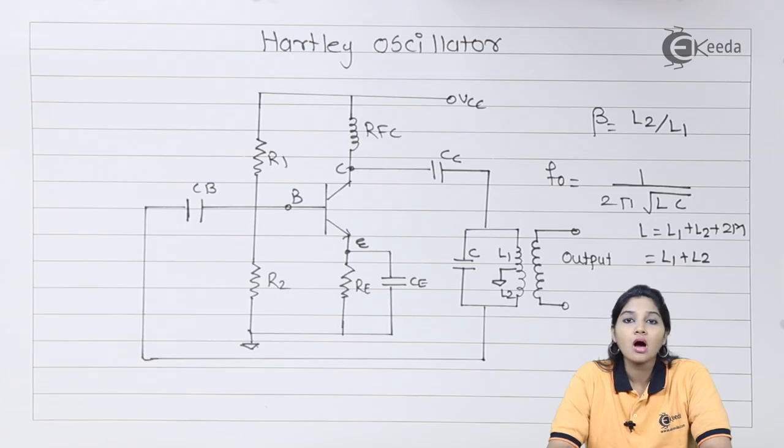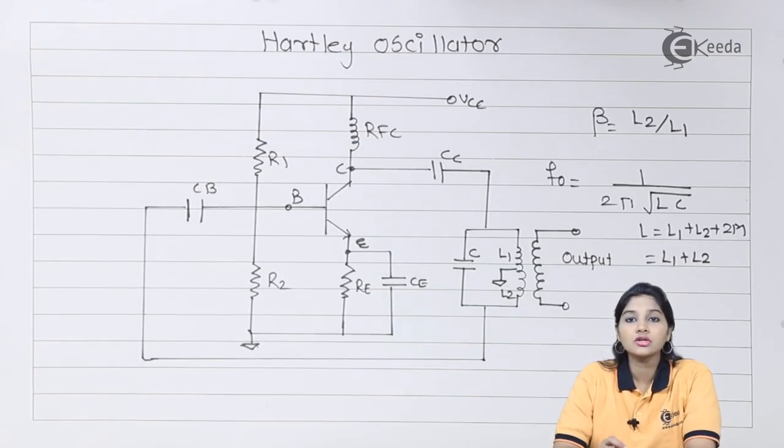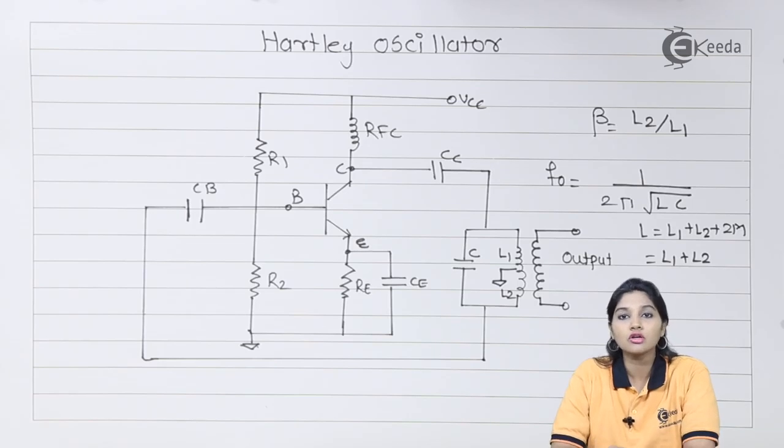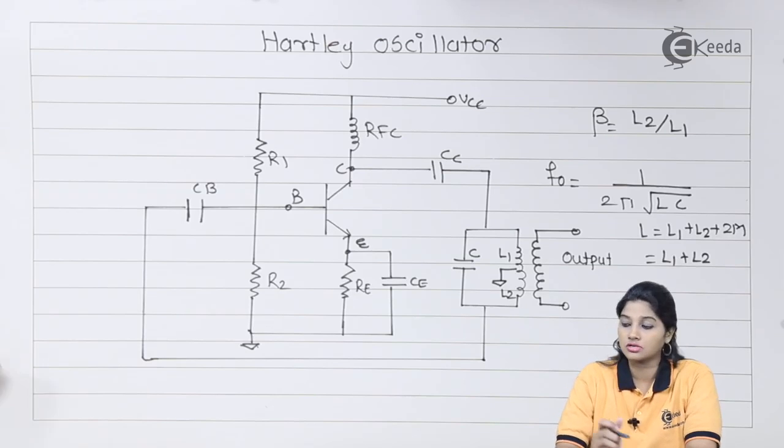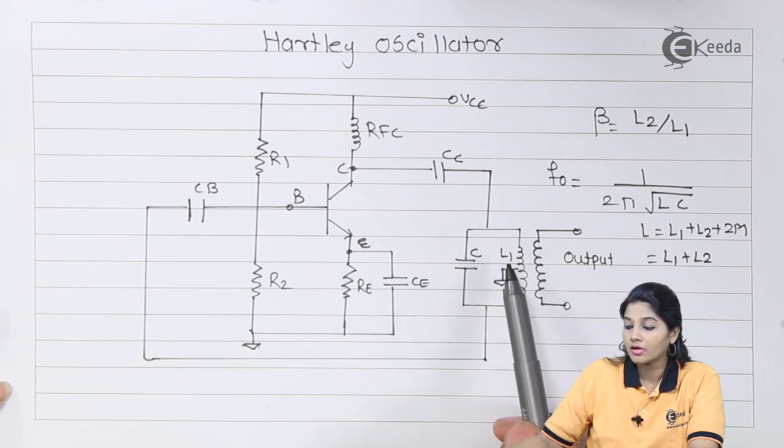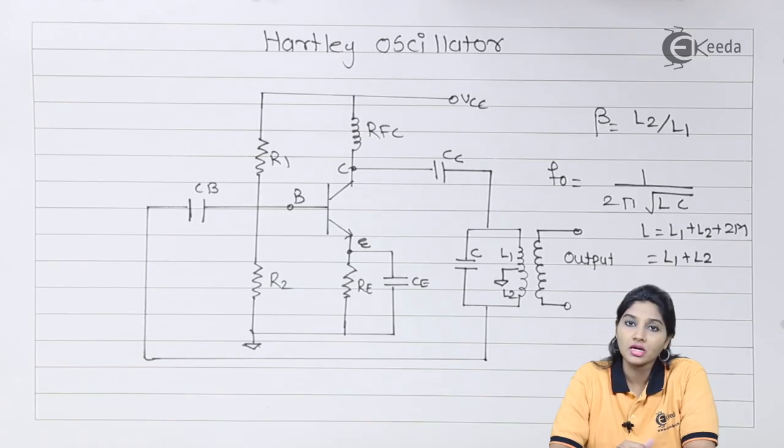Now let's see how Hartley oscillator is constructed and how it works. For that purpose, we need to consider the circuit diagram first. As shown in the diagram, the Hartley oscillator circuit consists of an LC tank circuit which is also called as tune circuit. These circuits are used for generating radio frequency as a local oscillator. L1 and L2 along with capacitor C form a tank circuit.